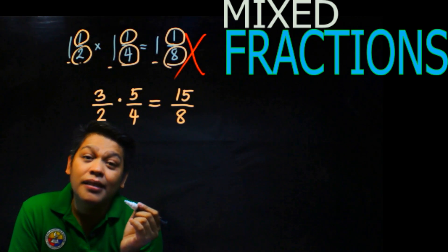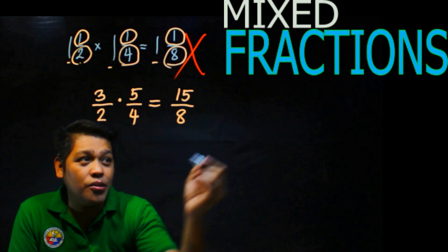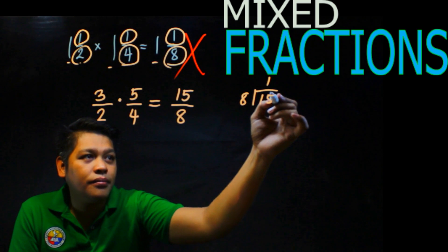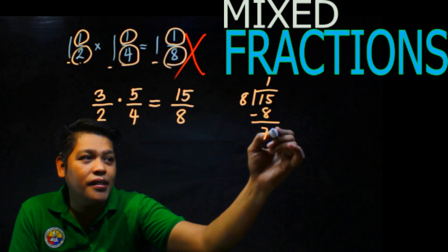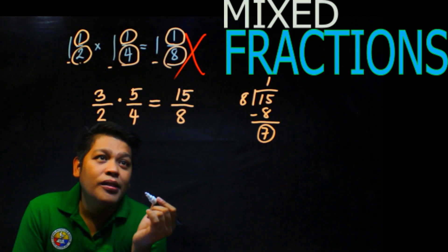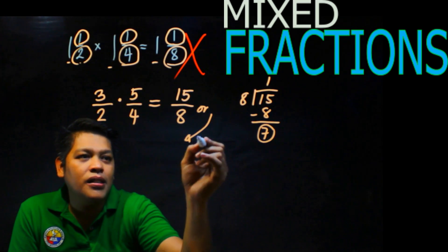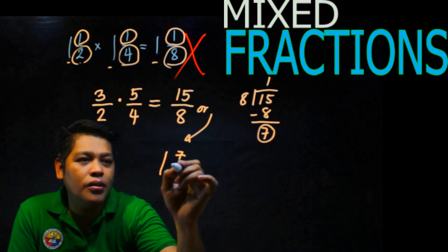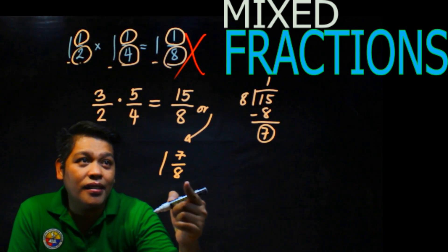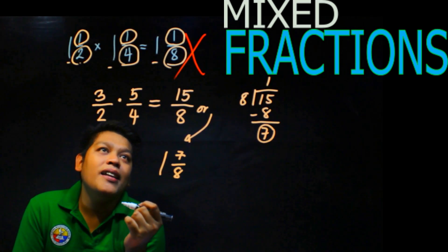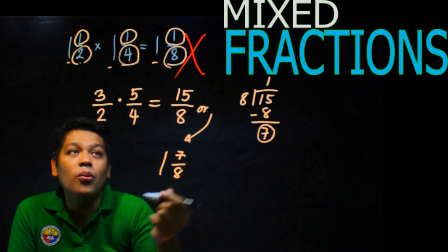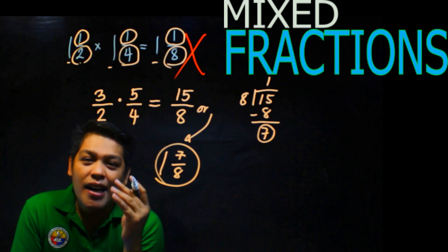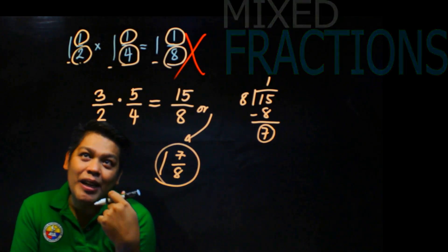Now convert 15 over 8 back to a mixed fraction. Divide 15 by 8: it goes in 1 time. 8 times 1 is 8; subtract from 15, the remainder is 7. So the answer is 1 and 7 over 8. That is very far from 1 and 1 eighth. That's why you make mistakes — so be careful.